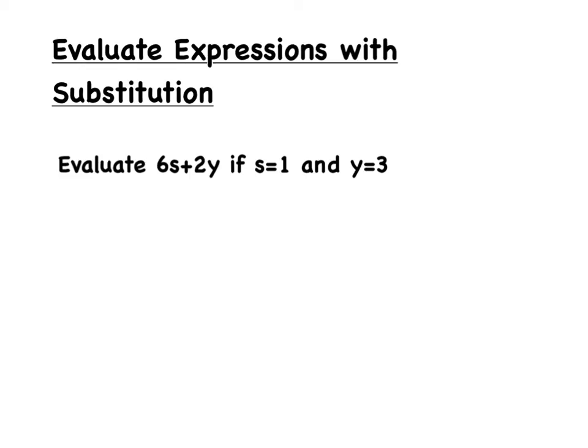So, now we have an algebraic expression 6S plus 2Y. And they're telling us that we are supposed to solve it when S is equal to 1 and Y is equal to 3. This is called the substitution method. So, all that we really have to do is to rewrite the equation of 6S plus 2Y. And wherever you see an S in the expression, plug in 1. And wherever you see a Y, all you have to do is plug in 3. It's that easy.